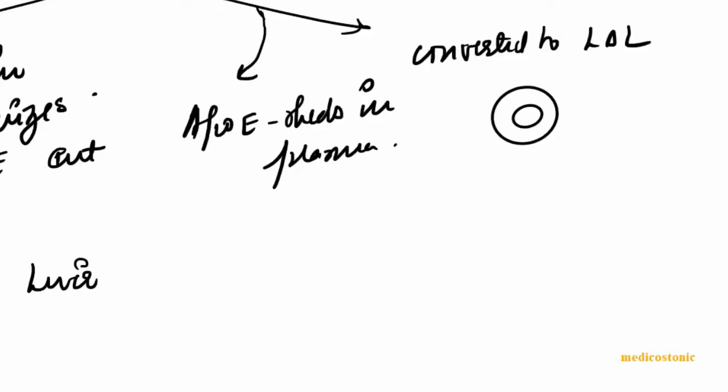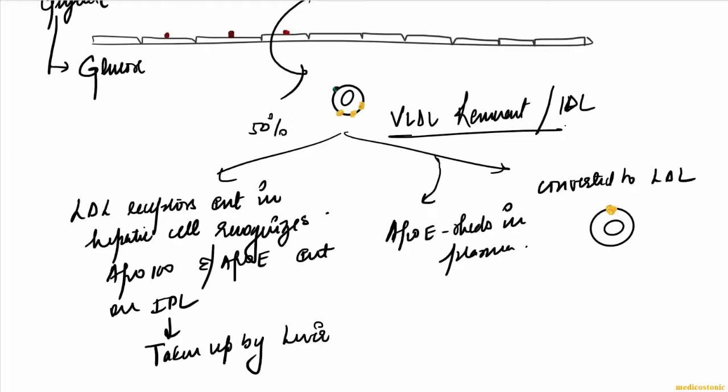This is how the LDL molecule looks. Because the apo E is shed in plasma, we have only apo B100 now. In the central core of this LDL molecule we will have cholesterol esters.